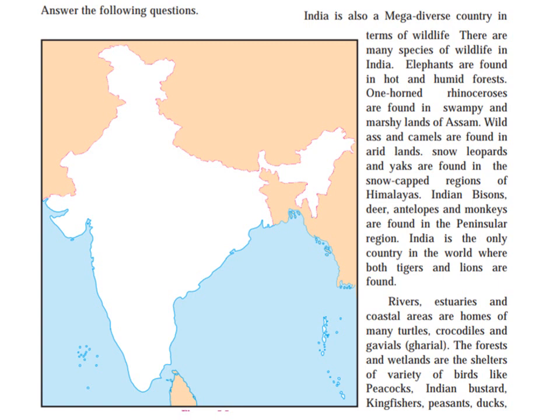India's wildlife is also diverse. Elephants are found in hot and humid forests. One-horned rhinoceros are found in the swampy and marshy lands of Assam. Wild asses and camels are found in the arid lands. Snow leopards and yaks are found in the snow-capped region of the Himalayas. Indian bison, deer, antelopes, and monkeys are found in the peninsular region.